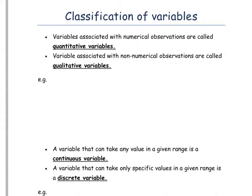Classification of variables — data falls into a couple of different categories. We've got quantitative and qualitative. Variables associated with numerical observations are called quantitative variables, whereas variables associated with non-numerical observations are called qualitative variables.